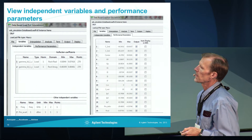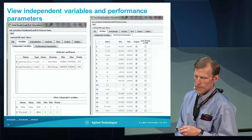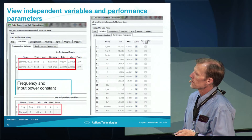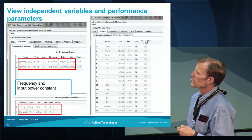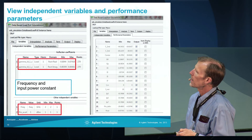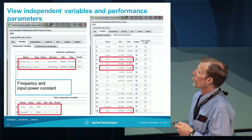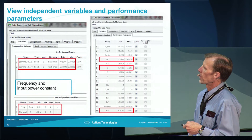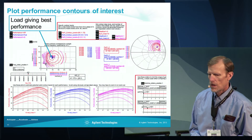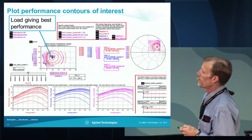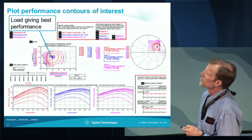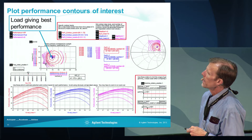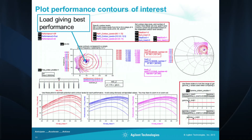This is what's in the load-pull file. We can see what the reflection coefficient ranges are, and we can see what the swept frequency and input power values are. In this case, this is a very simple example where we just have a single frequency and a single input power. We can look at different performances from the load-pull data, including efficiency, transducer power gain, and power delivered. This shows the contours from a simulation — in red we have the efficiency, blue is the power out, and purple is the transducer power gain — on a rectangular impedance chart and on a Smith chart.